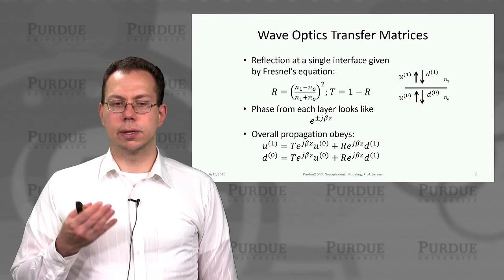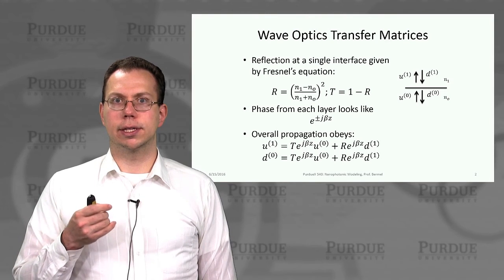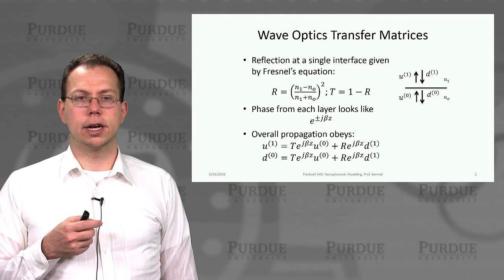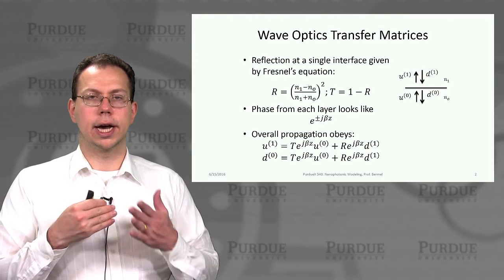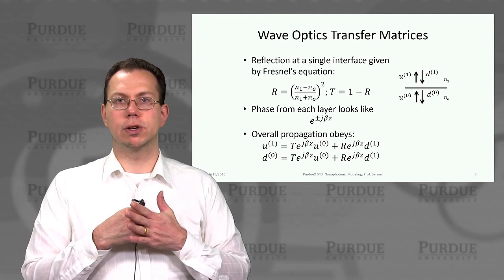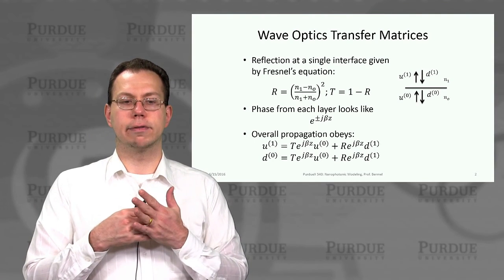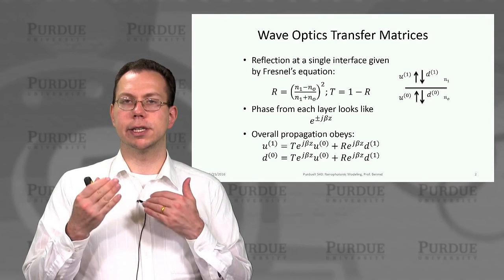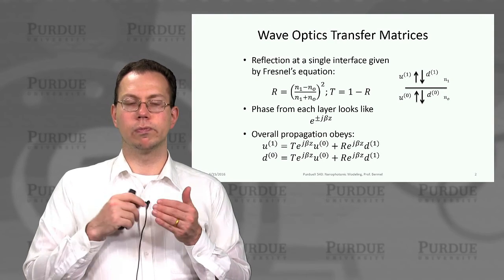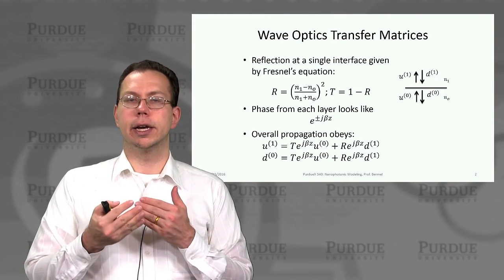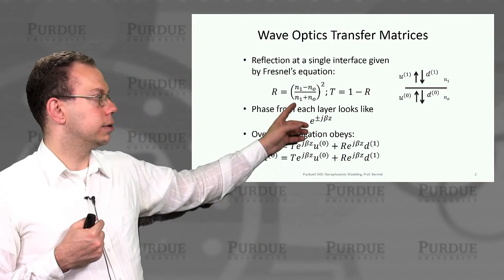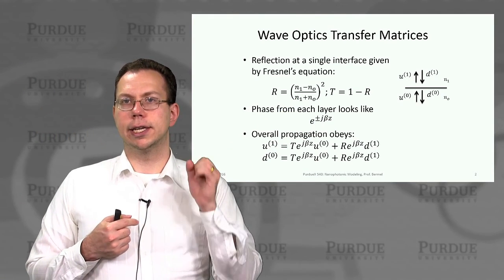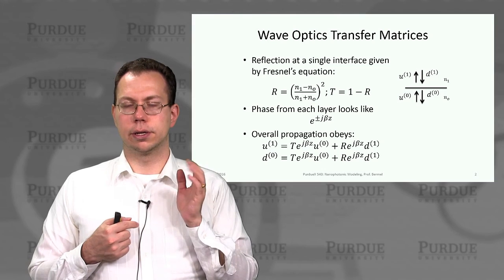And so, as you probably already know at this point, based on elementary optics, we can calculate that there's reflection at any kind of optical interface when you have two materials that have different refractive indices. And so if we assume the refractive indices are N0 and N1, and we're propagating at normal incidents, then we can write down the reflection as the difference of the indices divided by their sum quantity squared.